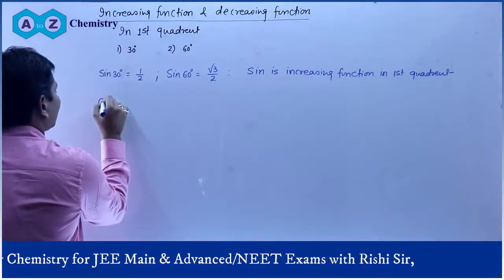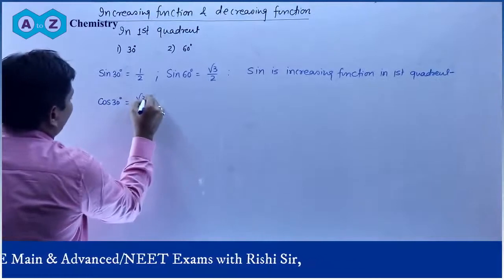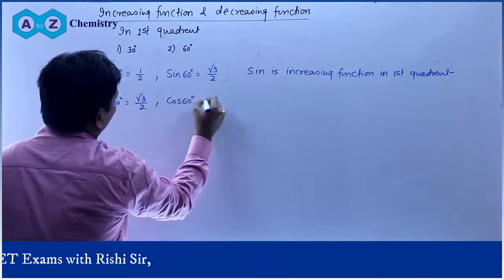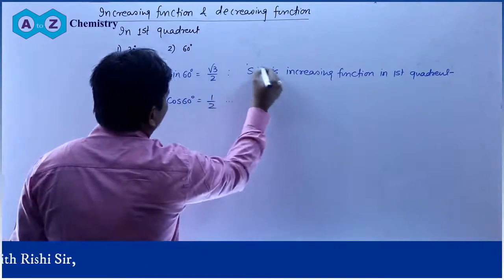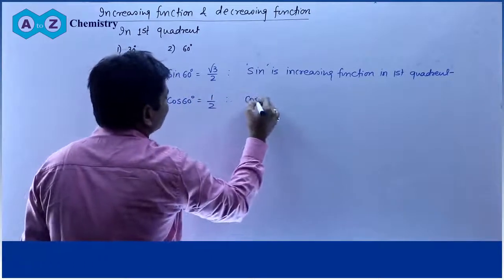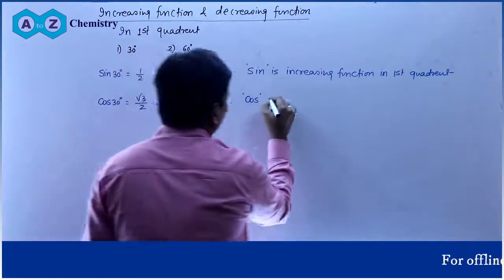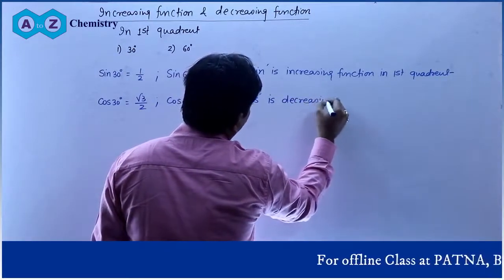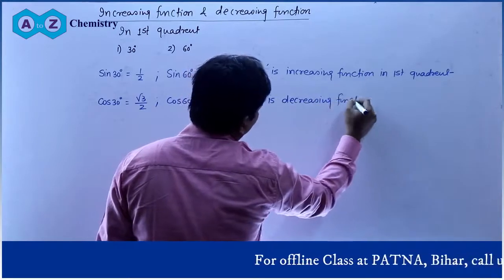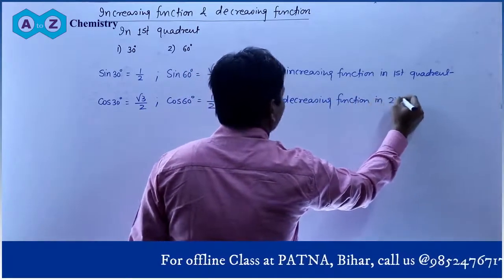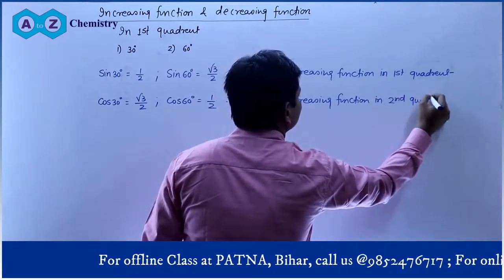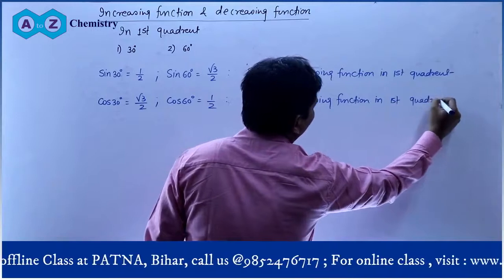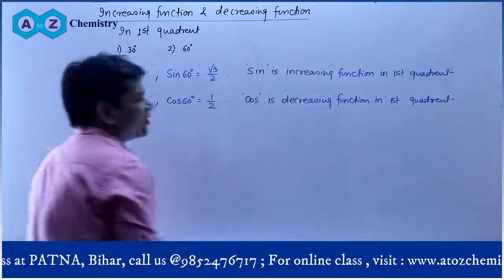Agar aap cos 30° dekhoge toh aapke paas hoga √3/2, aur cos 60° dekhoge toh aapke paas hoga 1/2. Angle badha 30° se 60° — lekin cos ki value ghati — √3/2 se 1/2 ho gayi. Isliye cos is a decreasing function in the first quadrant.